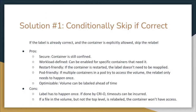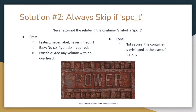Our second solution is to skip the relabel if the container is sufficiently privileged. Leveraging the spc_t SELinux type, since the container is essentially unconfined, we can avoid relabels completely. This solution is faster than the default or the first solution — no relabeling is ever needed. It is simpler, as it doesn't require configuring CRI-O or adding special annotations to the pod, and it is portable — any volume can be mounted into any privileged pod without incurring relabeling cost. However, this solution is not very secure; the CRI-O team does not recommend giving a pod this much privilege unless absolutely trusted, as a container breakout could cause serious issues on the host since the pod is completely unconfined by SELinux.